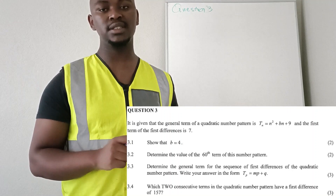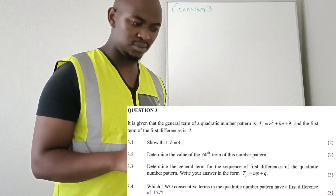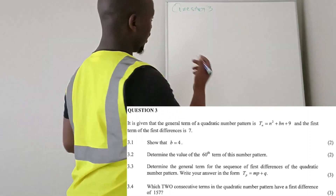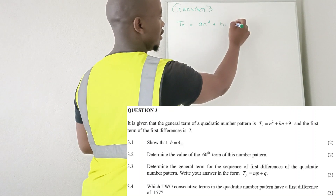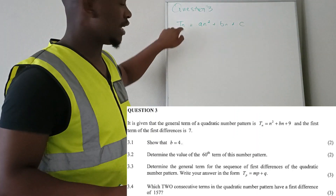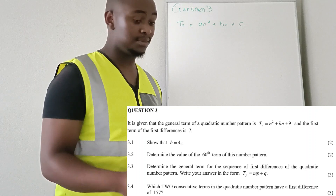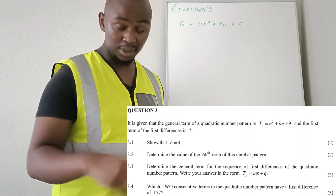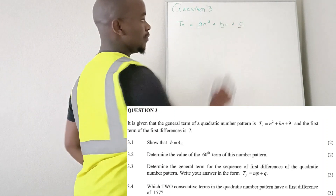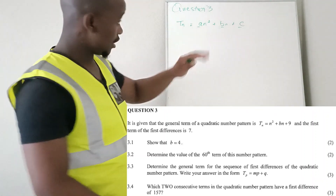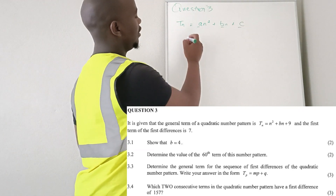We are asked to show that p is indeed equal to four. A quadratic sequence is defined by this equation: Tn = an² + bn + c. This is the value that exists in the nth term. We have unknowns a, b, and c, and they tell us different stories of that quadratic pattern.